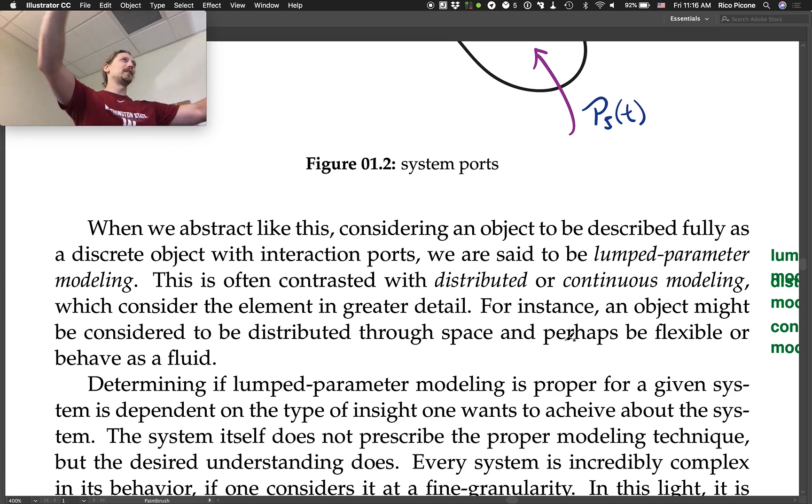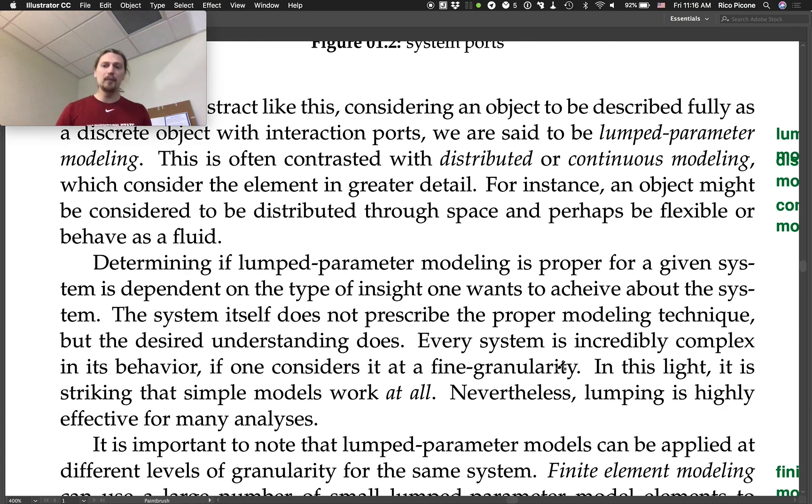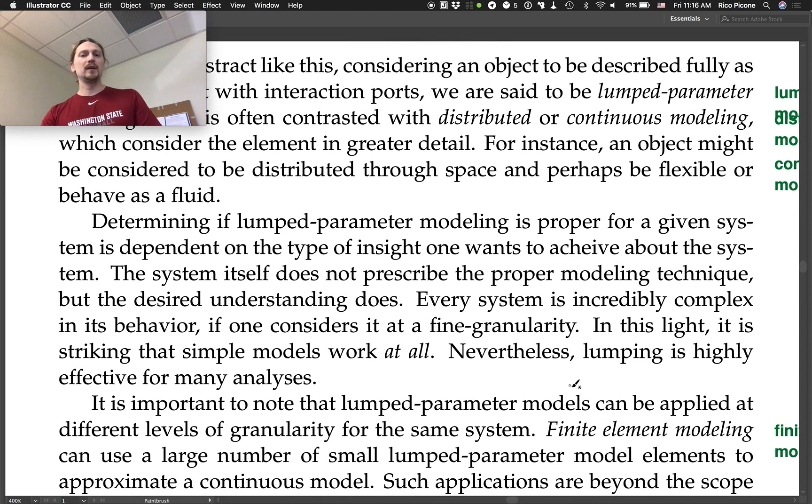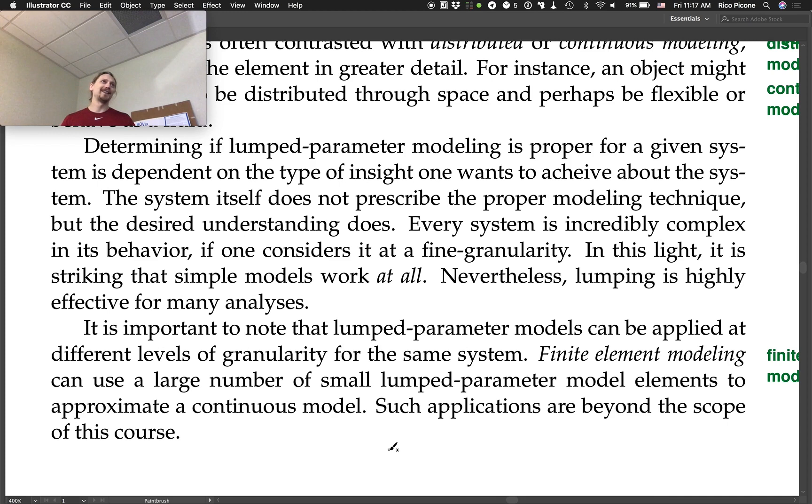I'm trying to kind of map out the different boundaries because there's a tendency to either say, 'Oh, I like this system dynamics stuff, I could just do this analysis on everything. Fluids is hard but I could do system dynamics analysis on fluids, so I'll just do system dynamics for everything.' I'm trying to show you where the boundaries are and why they're there. You need both, depending on the problem. You might need to apply one or the other or some mixture of the two. Determining if lumped parameter modeling is proper for a given system is dependent on the type of insight one wants to achieve about the system. The system itself does not prescribe the proper modeling technique, but the desired understanding does. Every system is incredibly complex in its behavior if one considers it at a fine granularity. The complexity just increases.